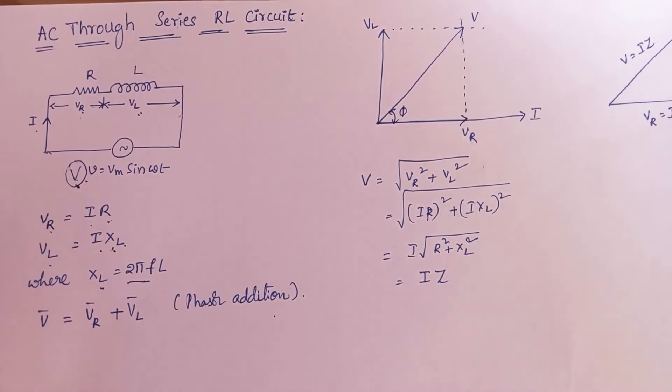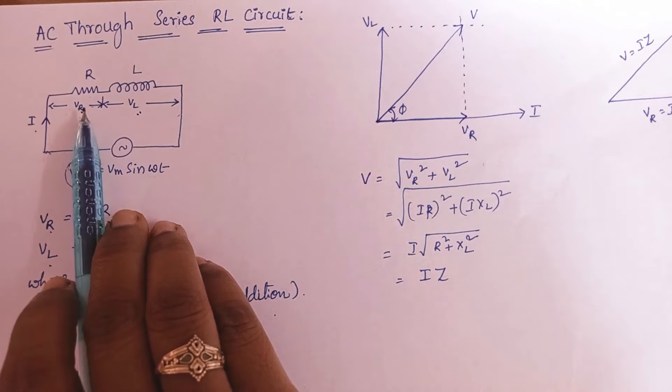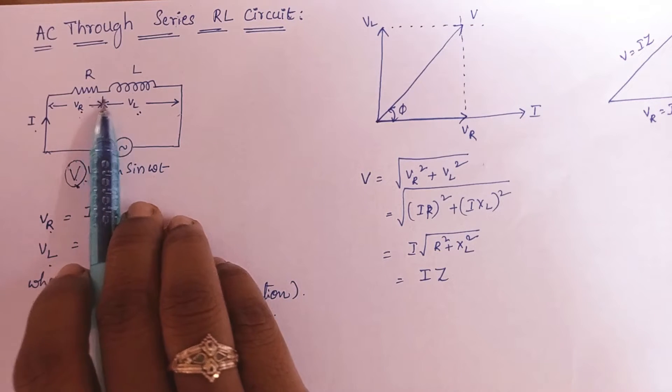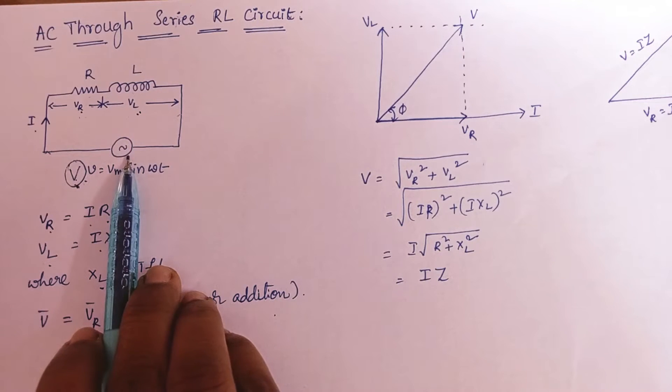Hello all, in this video we are going to learn about AC through series RL circuit. So here we have considered a pure resistor and pure inductor connected in series and this combination is excited with a sinusoidal voltage.